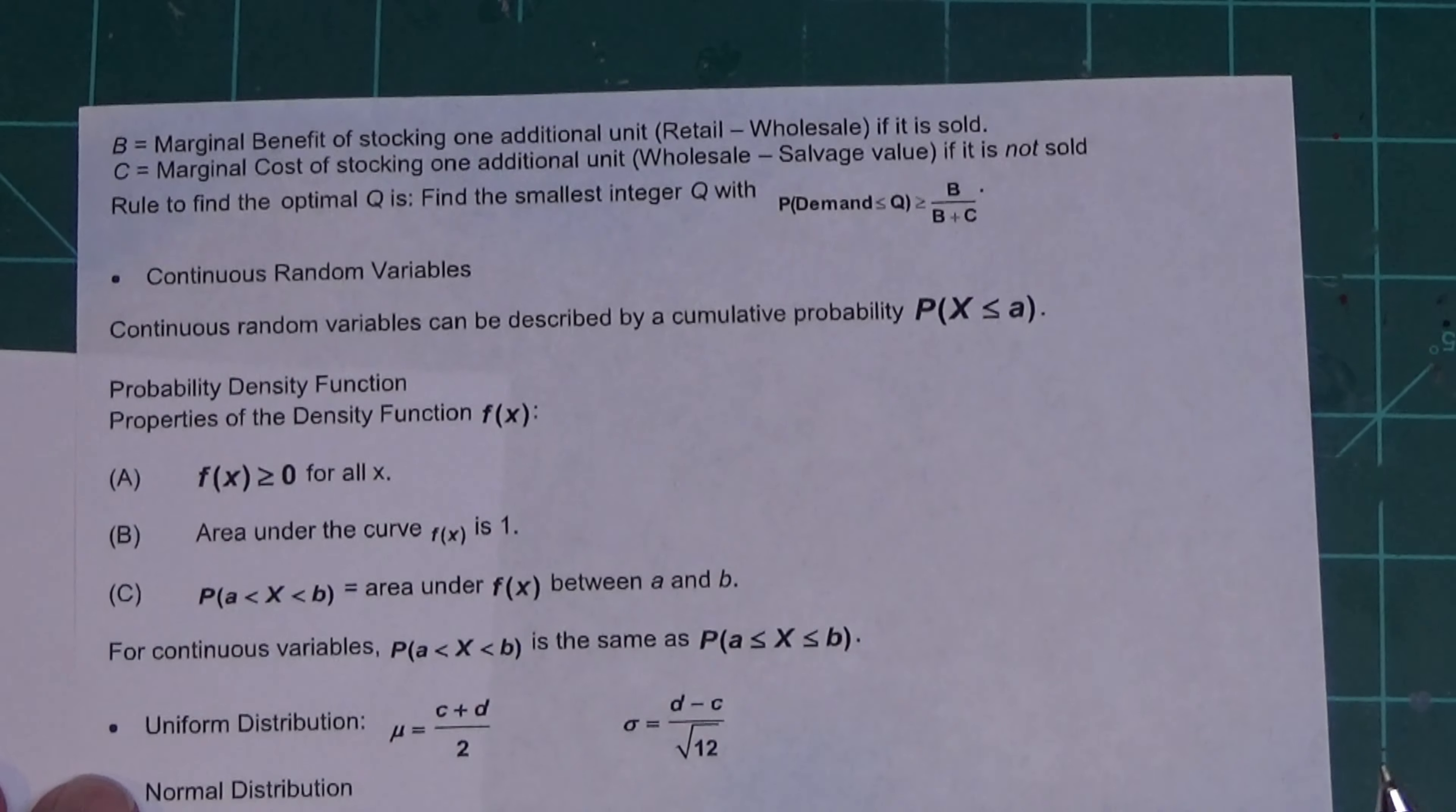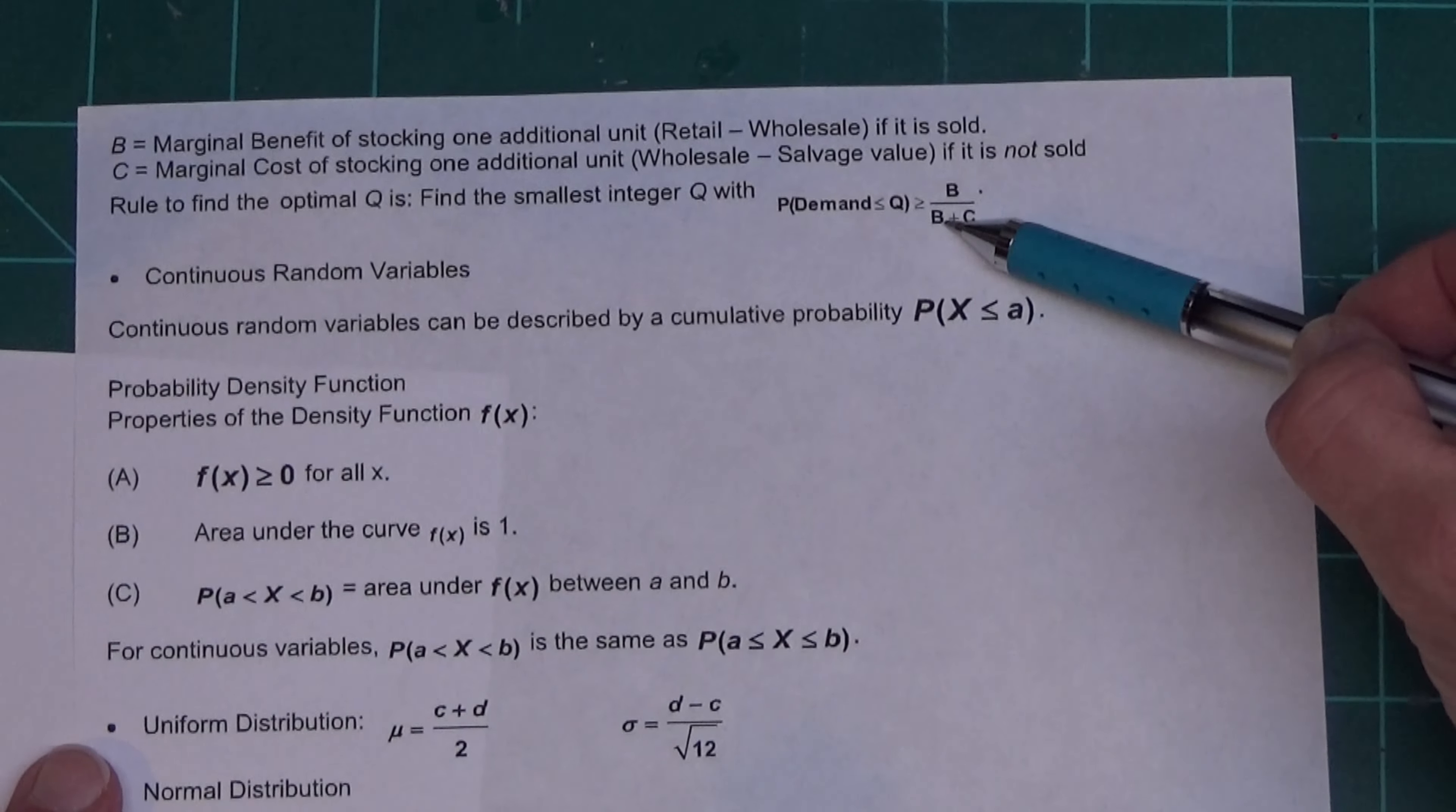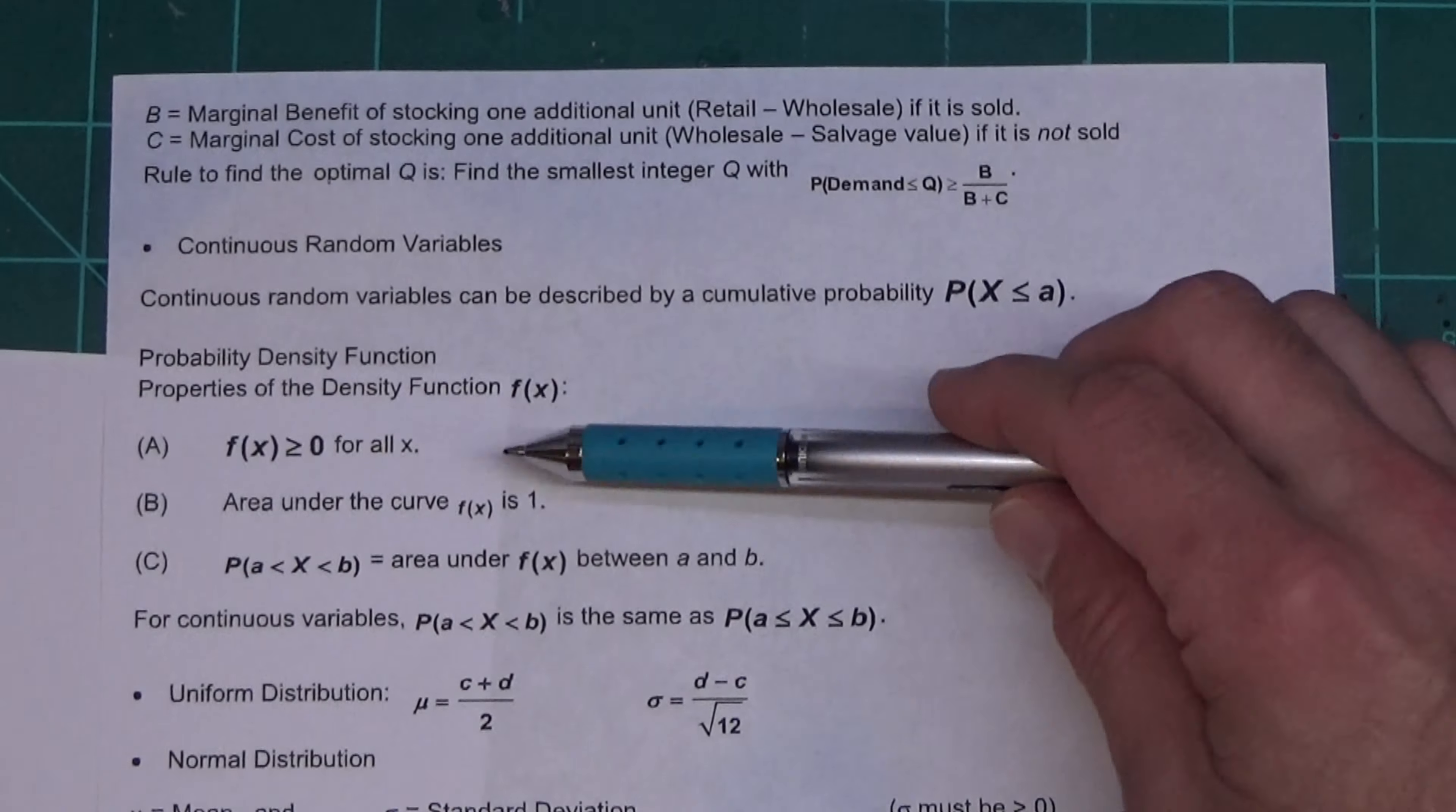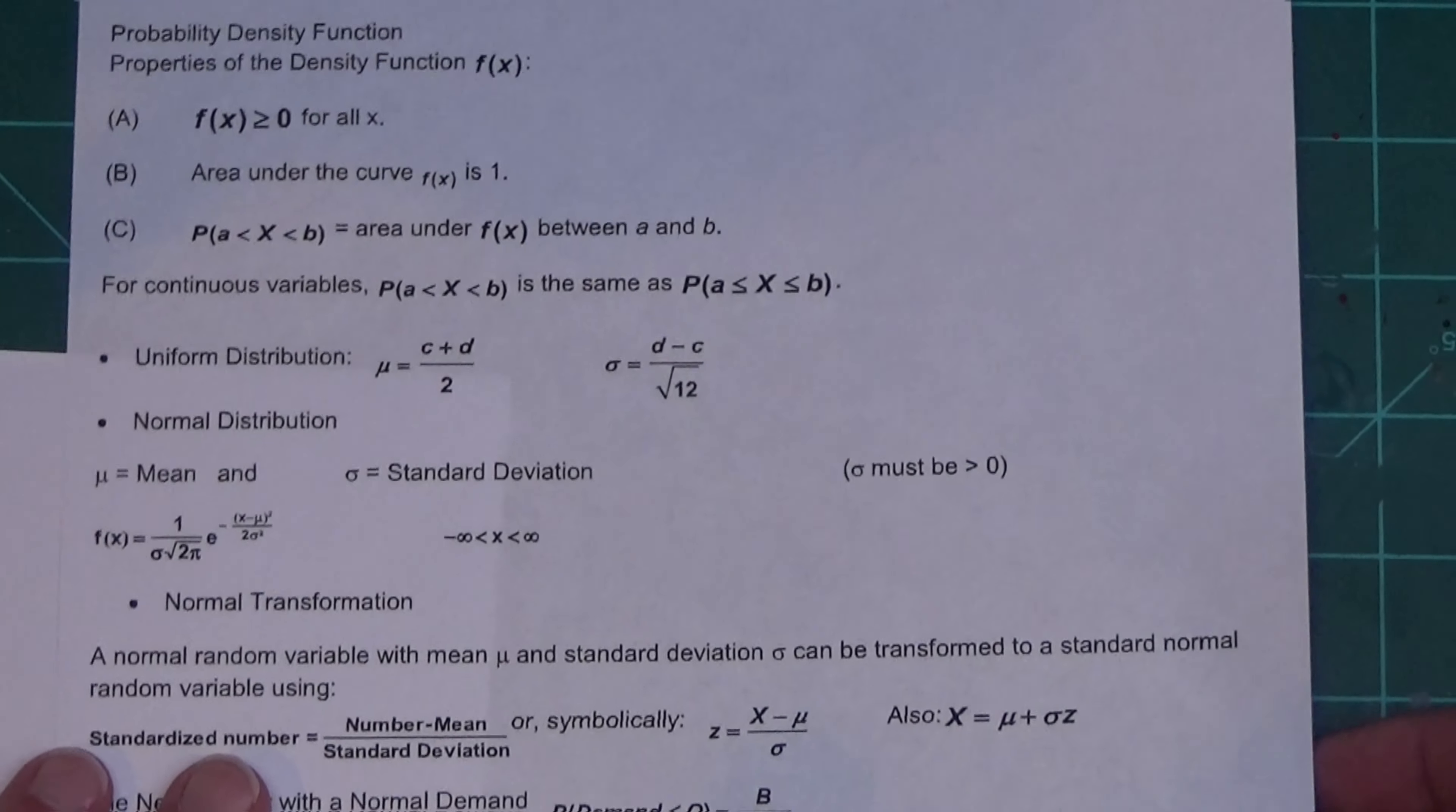Now looking at this, we have what B and C are in this formula: B over B plus C. This represents an area in a continuous distribution. Down here she starts talking about continuous distributions and probability density function.